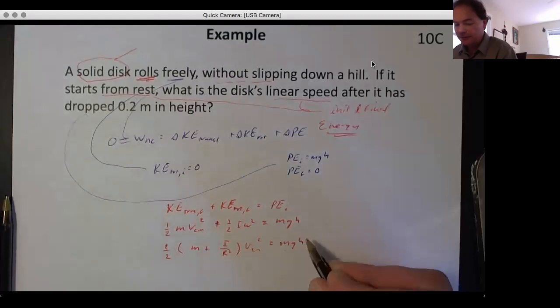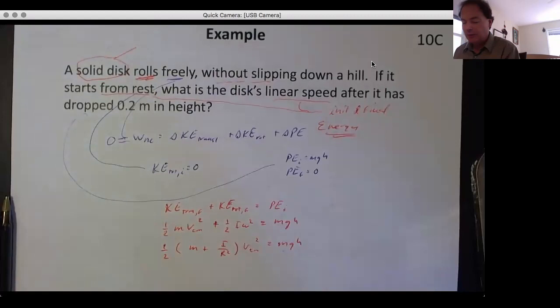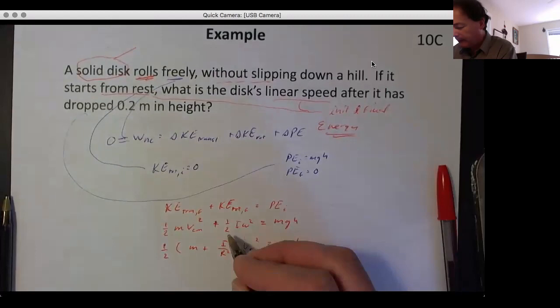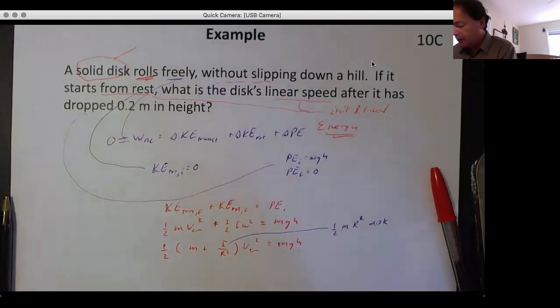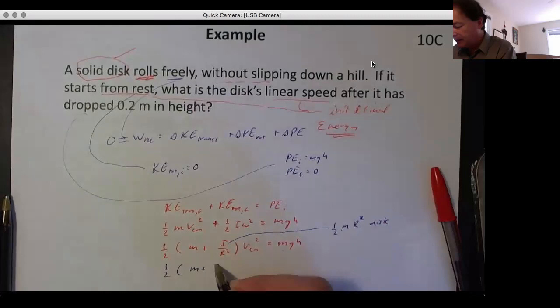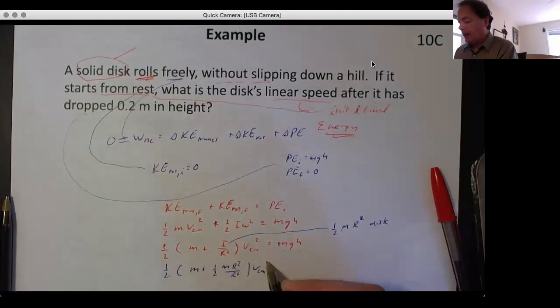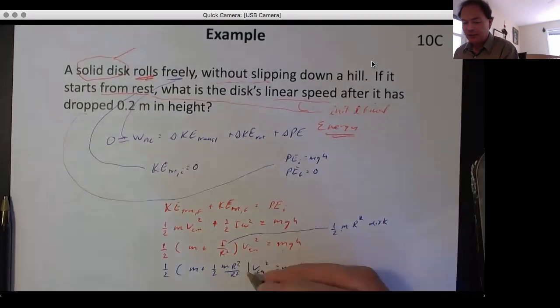And now we can actually start solving. If we put in I here for a disk, which is ½mR², then you get the ½m plus ½mR²/R² times v_cm² equals mgh. The R's here will cancel out, so you end up with one and a half—that's three halves.